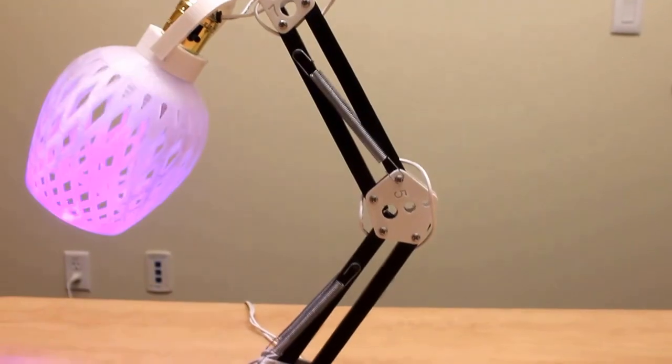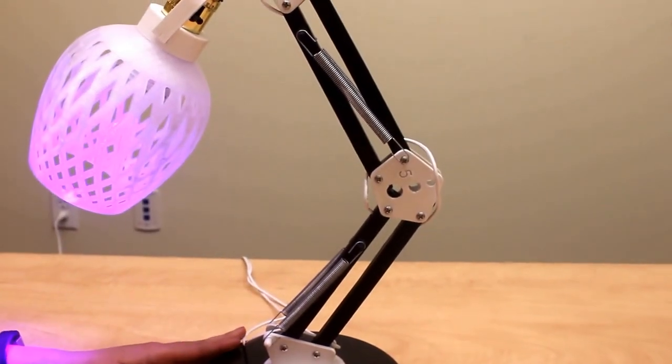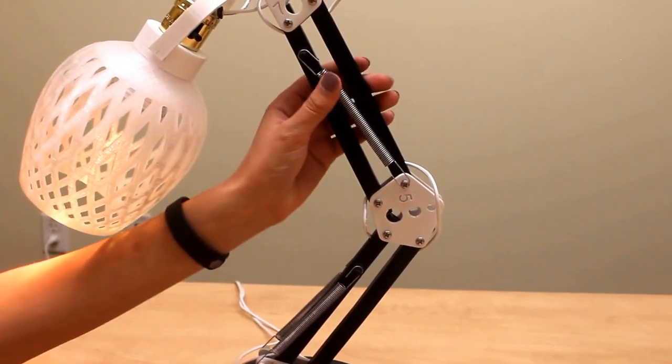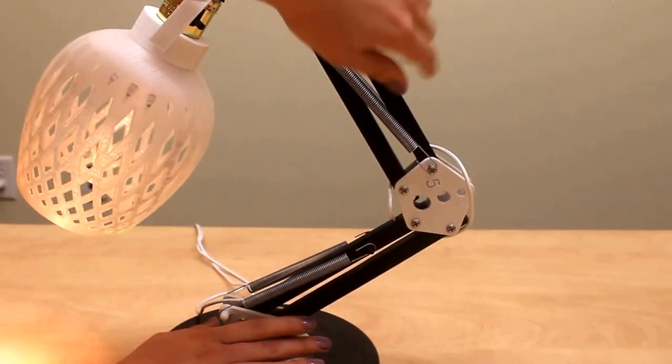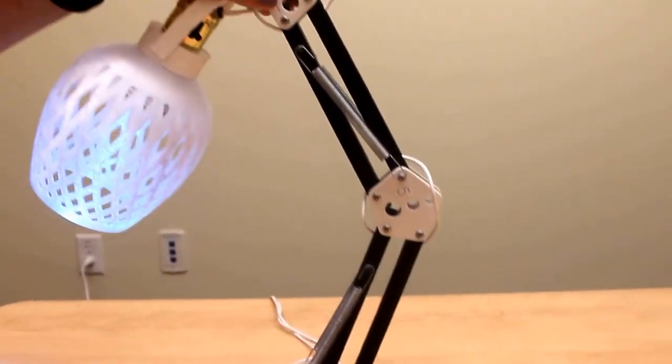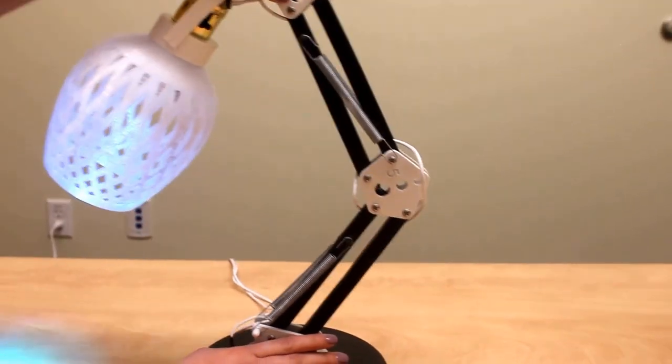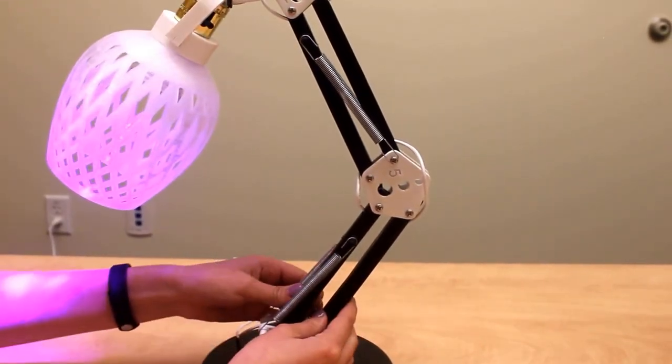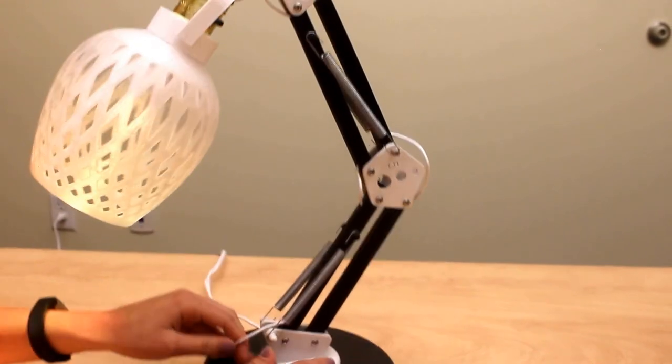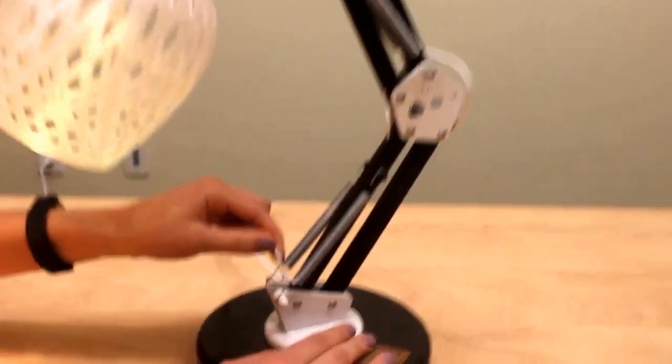The linkages allow for adjustability of the lamp. We can manipulate it in any direction using the springs and connection points to direct the light source wherever you would like. The bars themselves are thick enough to support the weight of the lamp and they also have a wiring cavity to allow for electrical components without having them exposed.